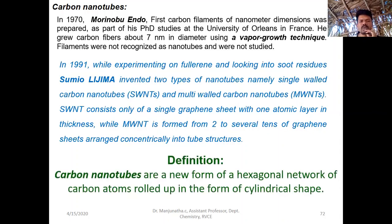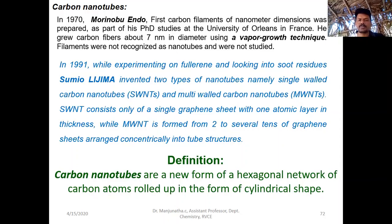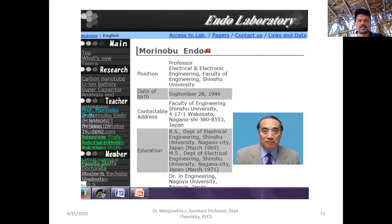Carbon nanotubes are a new form of hexagonal network of carbon atoms rolled up in the form of a cylindrical shape. Professor Marin Abu Endo is a professor in Electrical and Electronics Engineering at Shinshu University — this is just for the information.